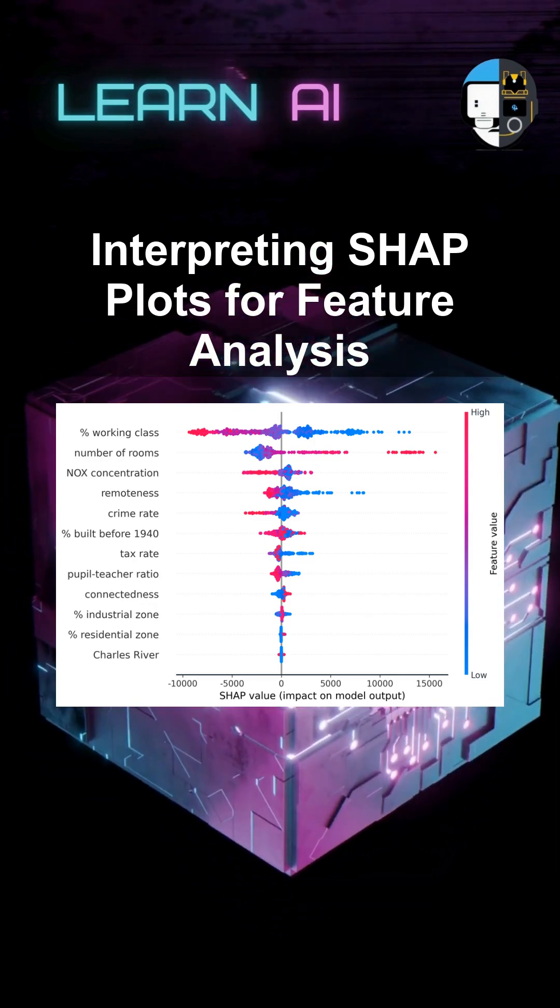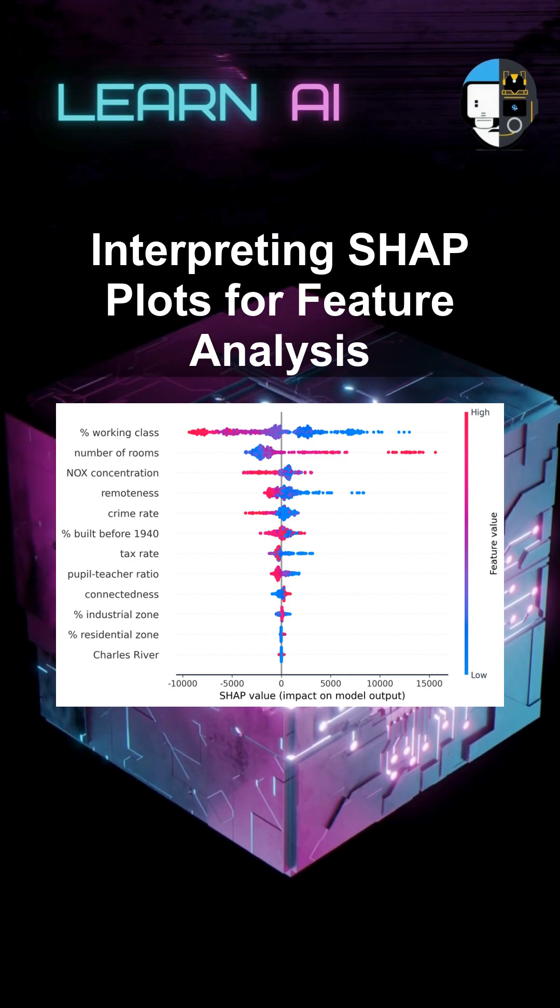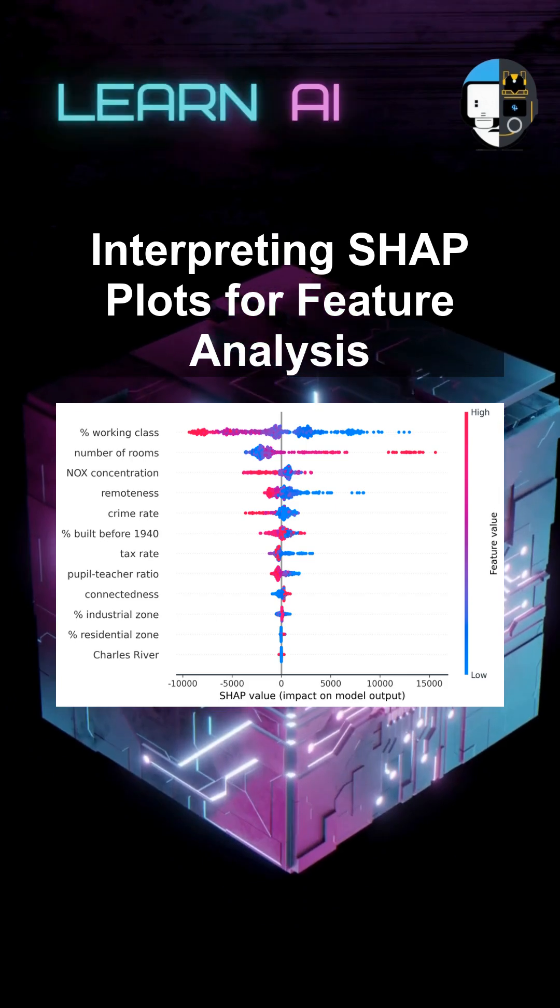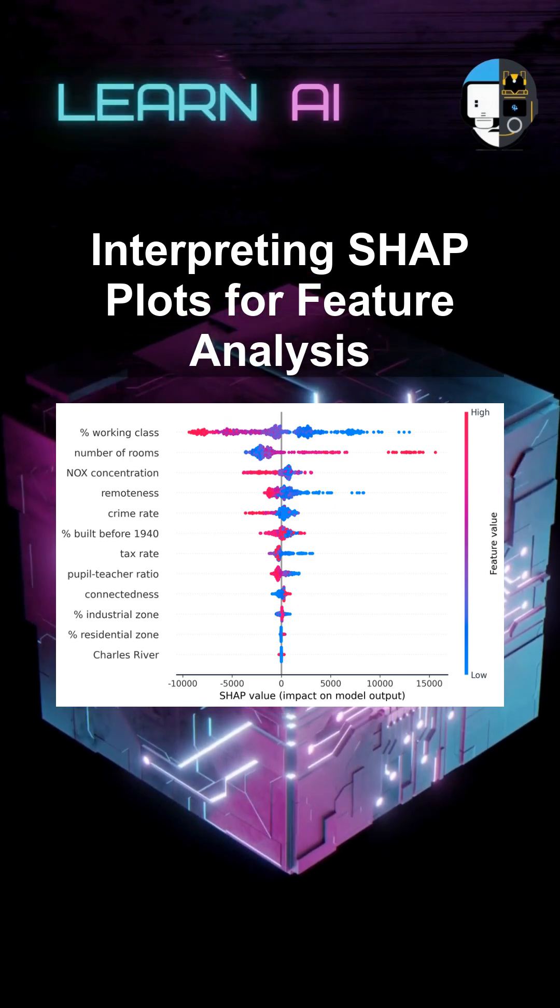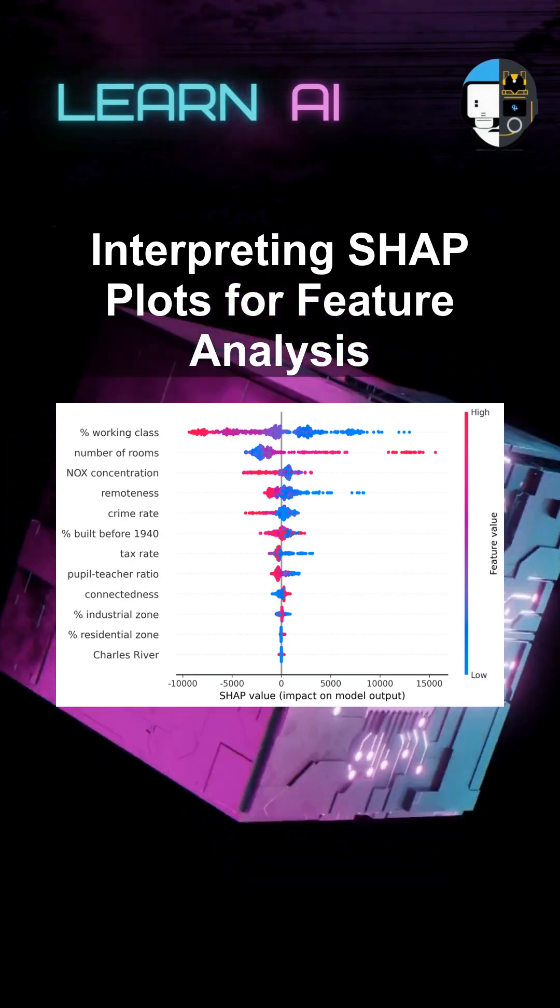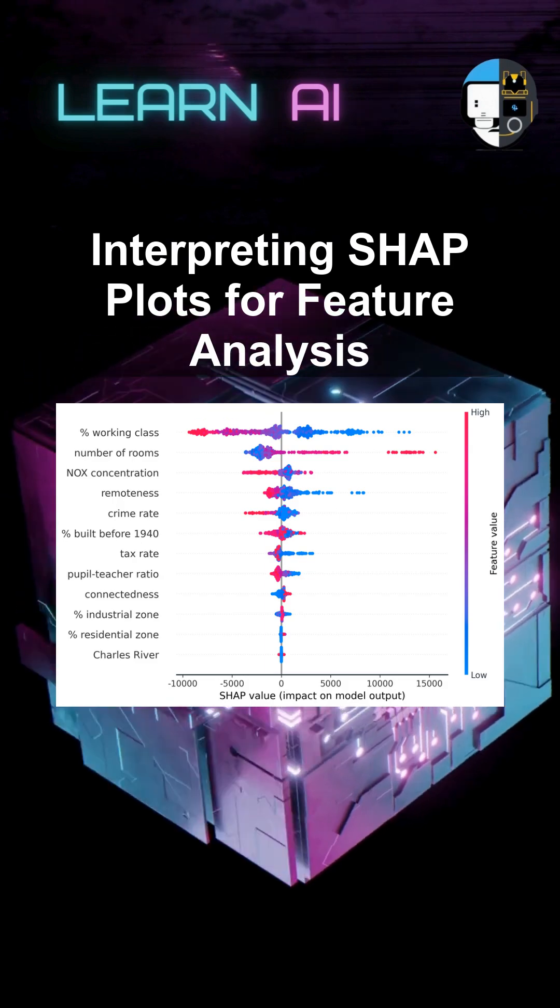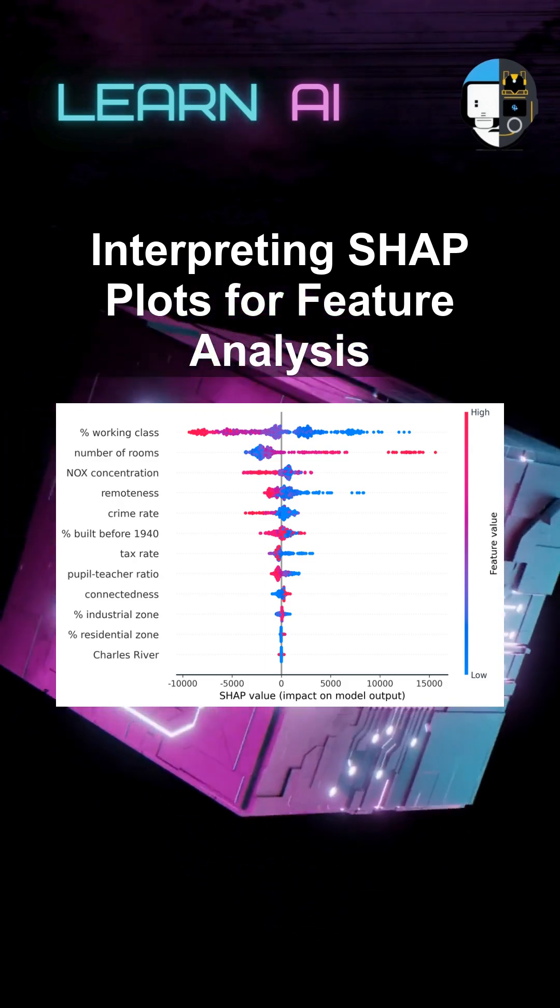By analyzing these plots, you can extract actionable insights into which features drive your model's predictions and how they interact. For instance, in a healthcare model, a dependence plot might reveal how age and blood pressure interact to influence disease risk. Such insights are crucial for refining models and making informed decisions based on their predictions.